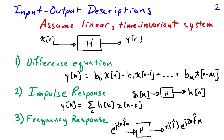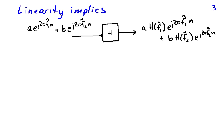A third way to relate the input to the output is using the frequency response of the system. If we apply an input complex sinusoid e to the j 2 pi f-hat n, then the output of the system is equal to that same complex sinusoid but modified by h of f-hat. This is a complex number that changes the amplitude and phase of the input sinusoid. Frequency response combined with a spectral representation for signals becomes very powerful for developing insight and understanding the behavior of systems.